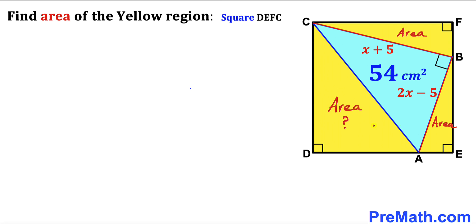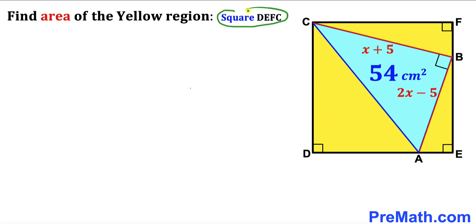The yellow shaded region consists of this area, this area, and this area combined — all outside the blue triangle but inside the square DEFC.